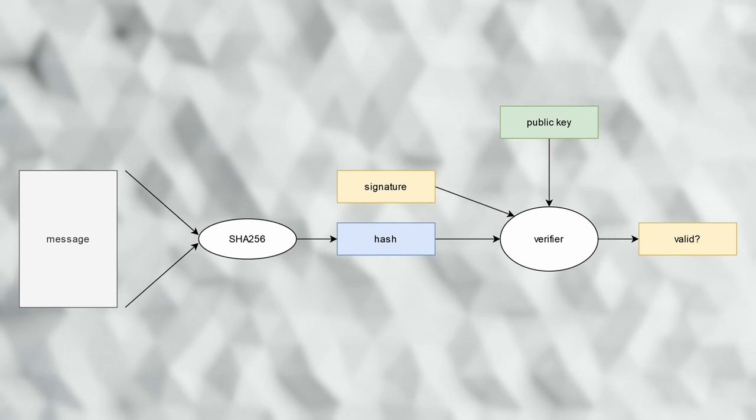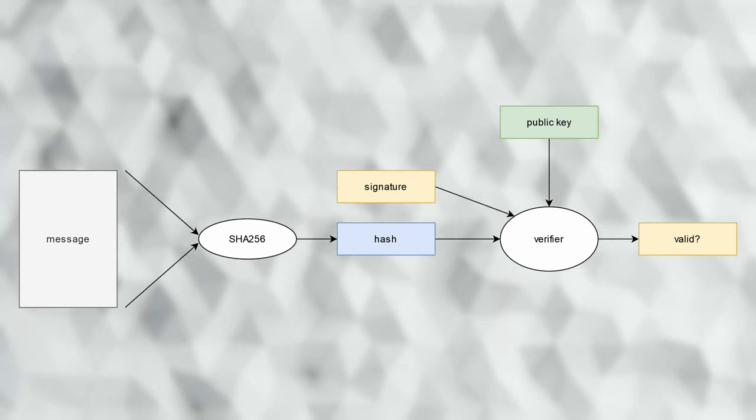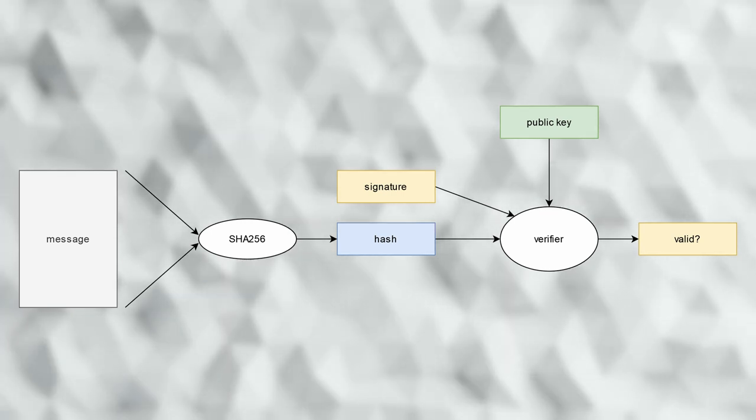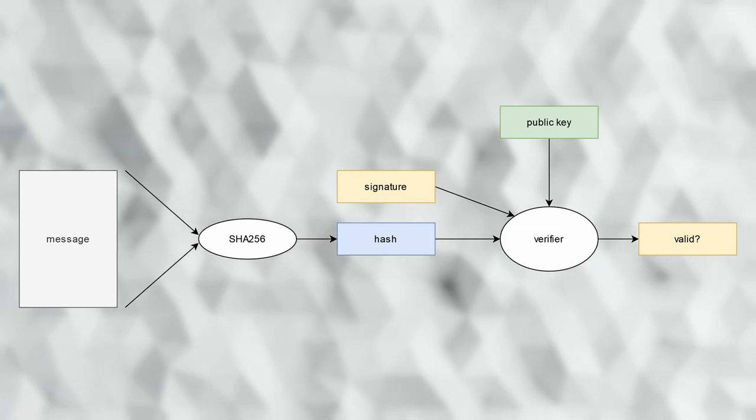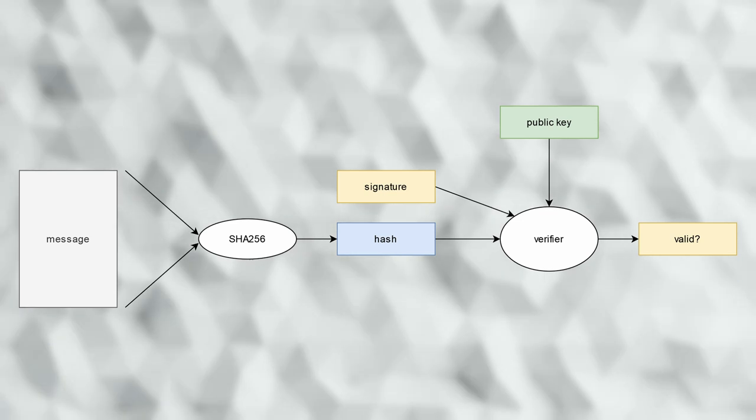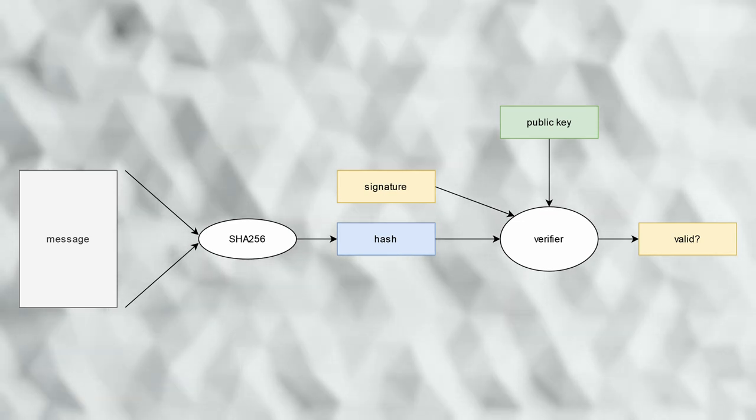Later, to verify this signature, we take the image we want to verify and run it through the digital hash function. The hash output is given along with the digital signature and the public key to the verify operation, which will tell us if this signature really does sign this message with this key.